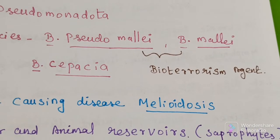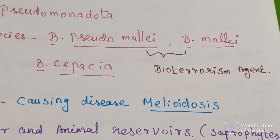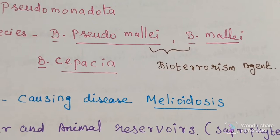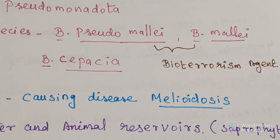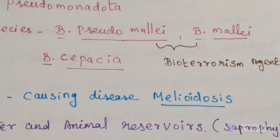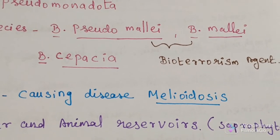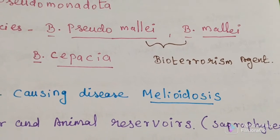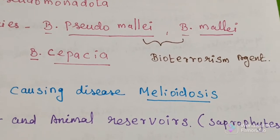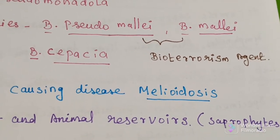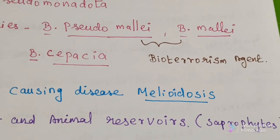Burkholderia pseudomallei and Burkholderia mallei are considered potential agents of biological warfare and are classified as bioterrorism agents.